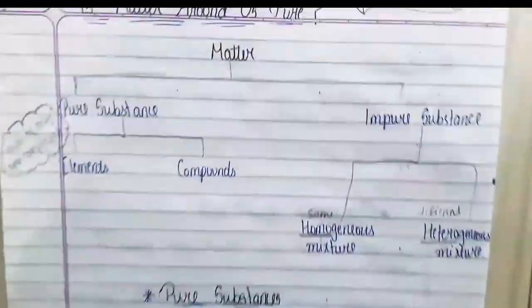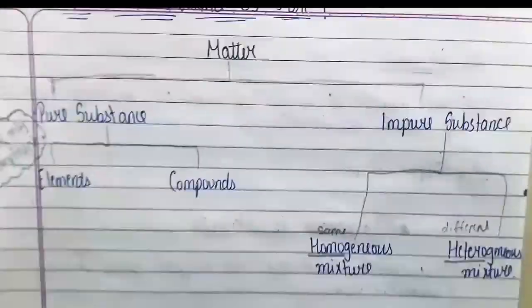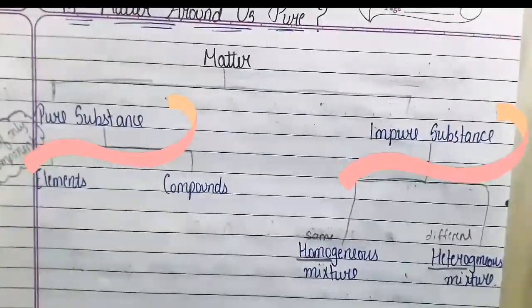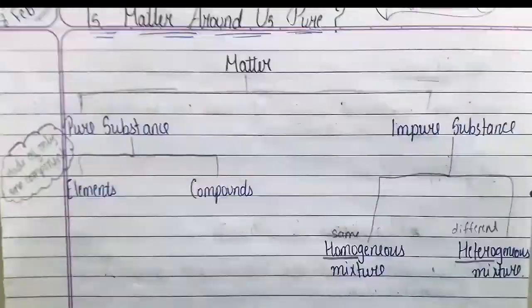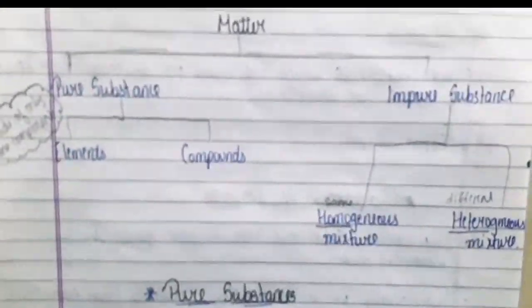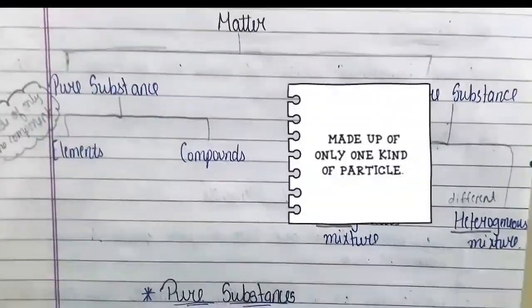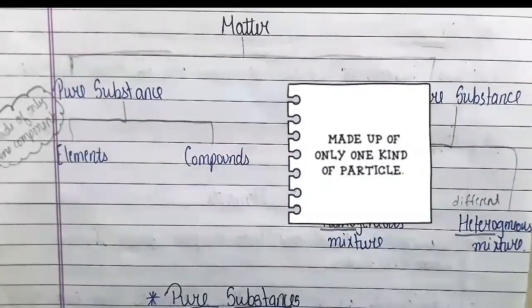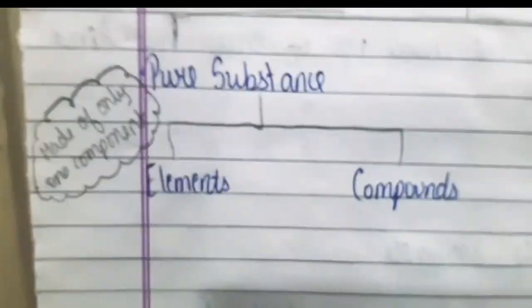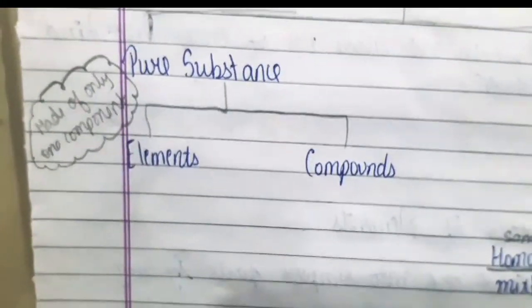Now that we understand what matter is, matter is subdivided into two parts: pure substance and impure substance. Pure substance is made up of only one component.